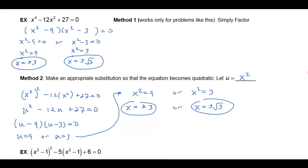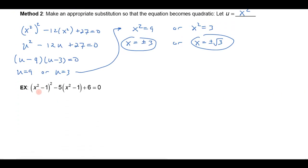Let's do another one. Notice this one here — if I were to multiply all this out, I'd get x to the fourth and some other terms, and it wouldn't be a quadratic equation. But notice that I have the quantity right here — you could think of this as like Bob. Bob squared minus five times Bob plus six equals zero. So I'm going to make a substitution: I'm going to let u be x squared minus one. So this really is quadratic — this equation is quadratic in x squared minus one.